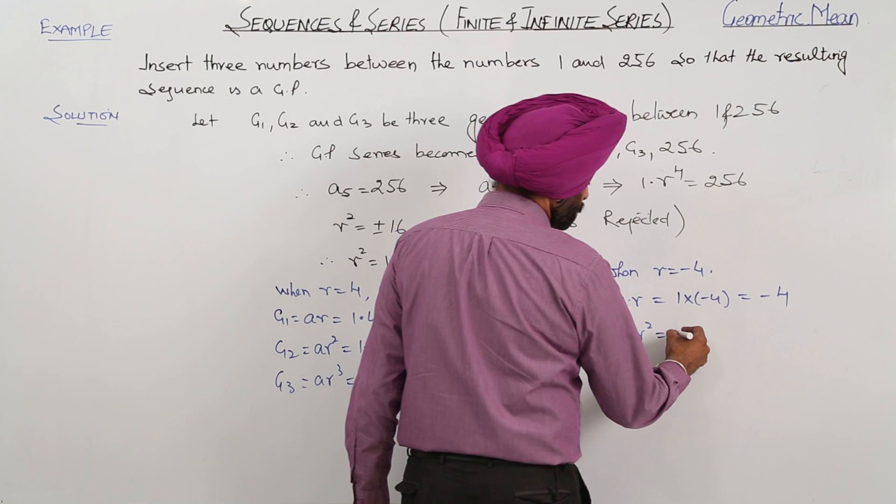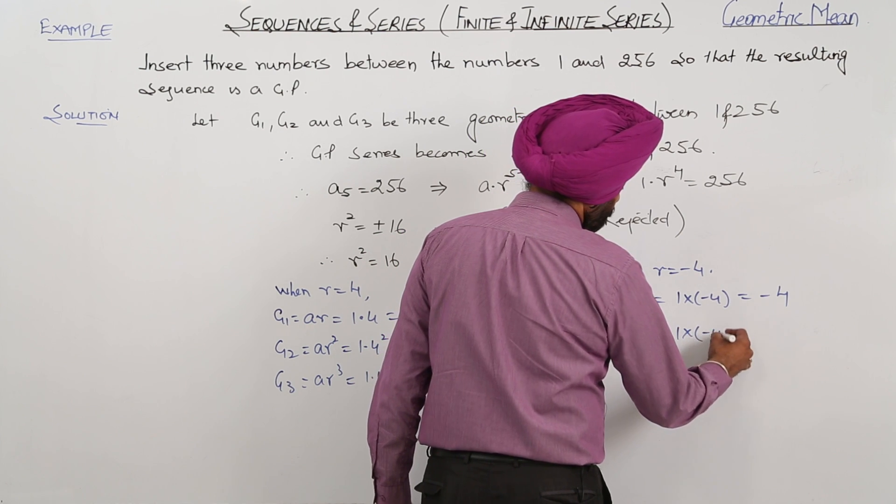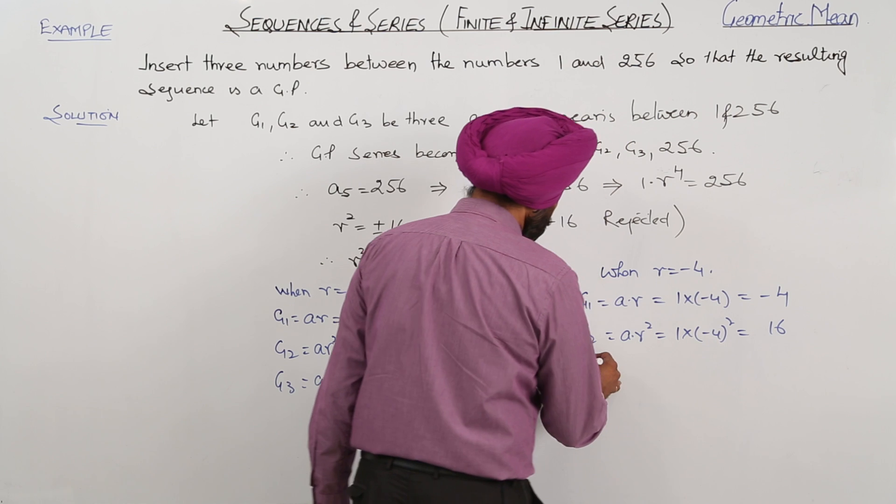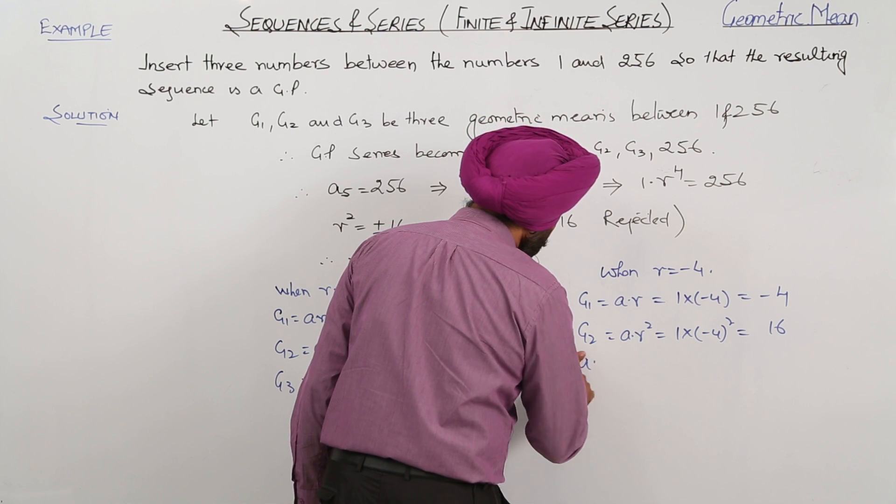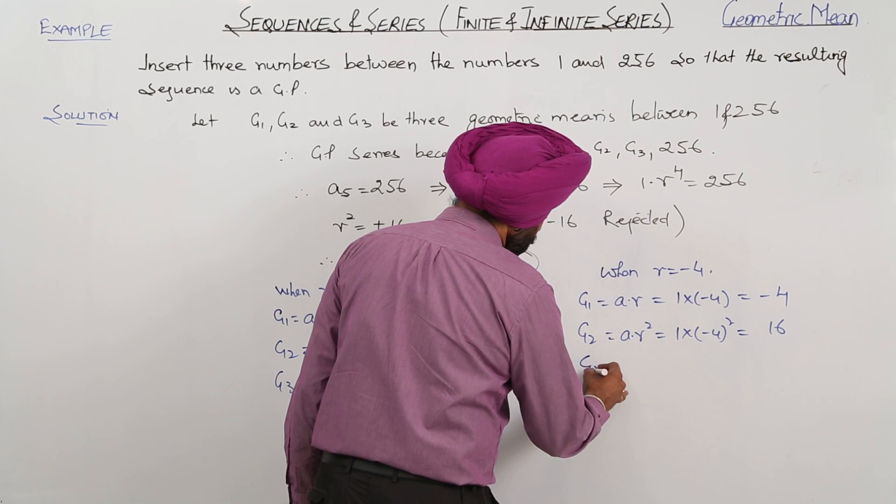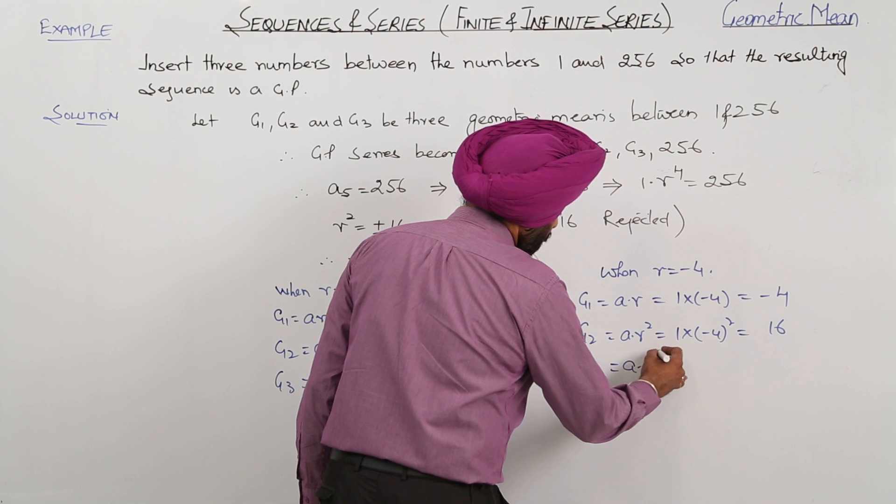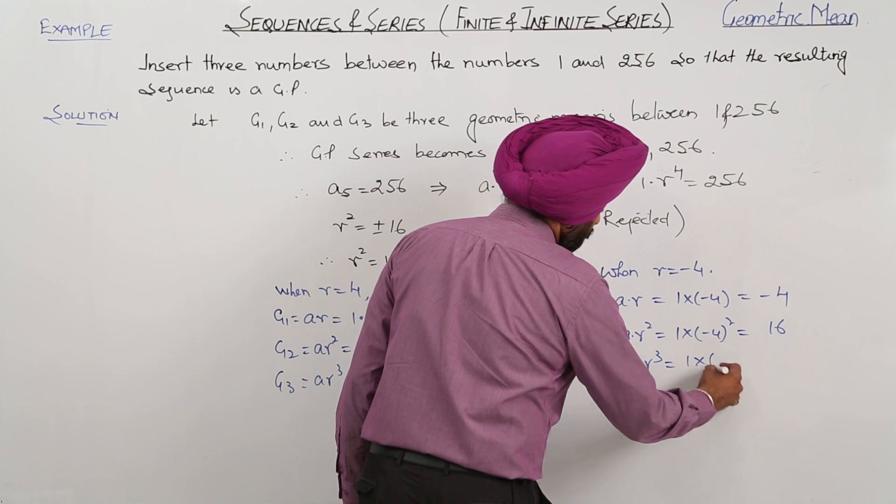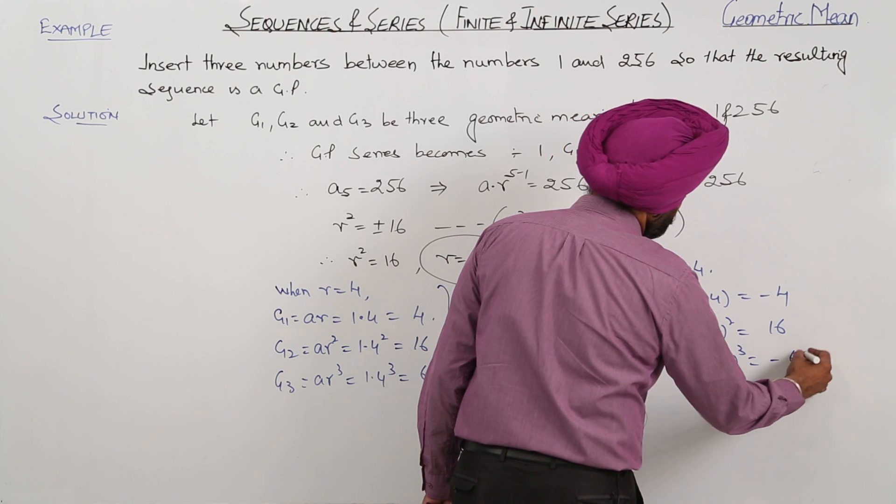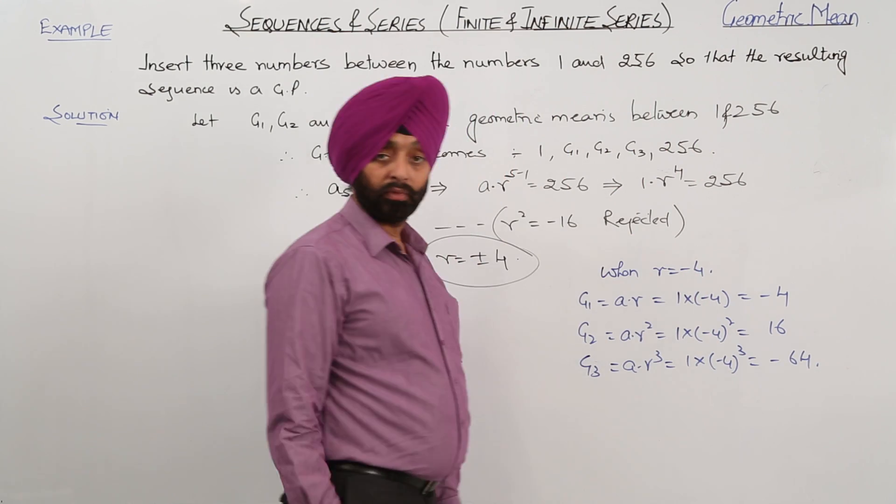G2 is equal to... G3 is equal to AR cube, this is equal to 1 times negative 4 cube equals negative 64.